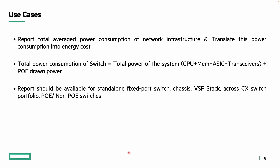The first and foremost use case is to report the total power averaged over a period of time and translate this power consumption into energy cost. The breakdown of total power consumption has two components: the total power of the system — CPU, memory, ASIC, and transceivers — along with the PoE drawn power. Reports can be generated for various scenarios including a standalone fixed port switch, a chassis switch, a VSF stack, or across the CX switching portfolio with PoE or non-PoE switches.